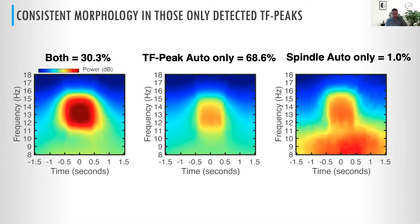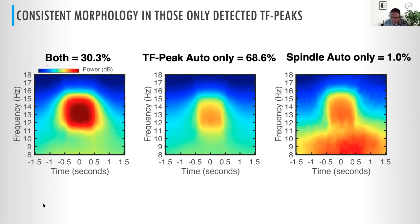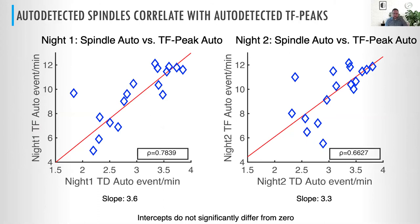We can look at the morphology: for the times picked by both detectors, we see a very clear time-frequency peak. For times picked only by the auto TF peak detector, we again see a clear time-frequency peak, just of lesser amplitude. For times picked only by the spindle auto detector, there's some garbage the detector picked up — but this only constituted 1% of the time that the spindle detector picked up something the TF peak detector did not.